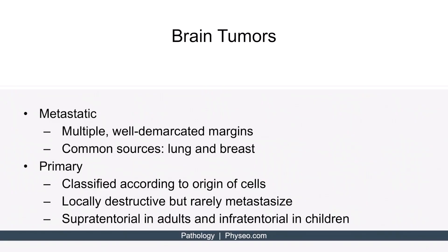Before we discuss the types of brain tumors, we first need to know that brain tumors can be metastatic or primary. Metastatic brain tumors are characterized by multiple well-demarcated margins, with common sources being the lung and breast cancer. Primary brain tumors are classified according to the origin of cells, such as astrocytes, meningothelial cells, ependymal cells, oligodendrocytes, or neuroectoderm.